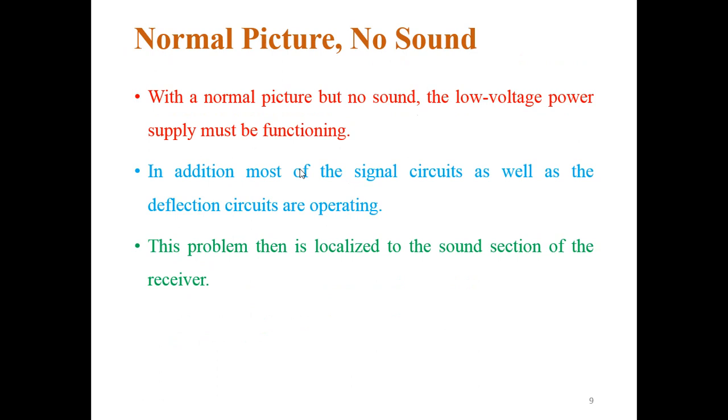Next is normal picture and no sound. It means again we are getting a proper signal from the antenna part. Then a normal picture or no sound, the low voltage power supply must be functioning. In addition, most of signal circuits as well as the deflection circuits are operating. Then the problem is localized on the sound section of the receiver only.